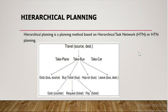From those steps, we choose one hierarchy and expand it. Here we take 'buy ticket' for the bus. If you want to get the ticket, you go to the counter, then you request your ticket — for example, requesting one ticket for the journey — and then you pay for your ticket. This is the next level of decomposition.